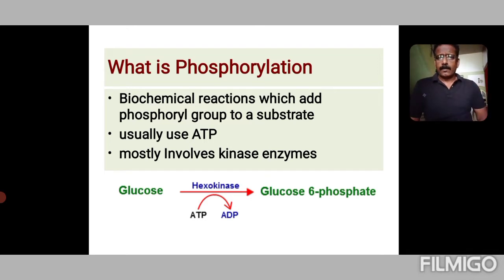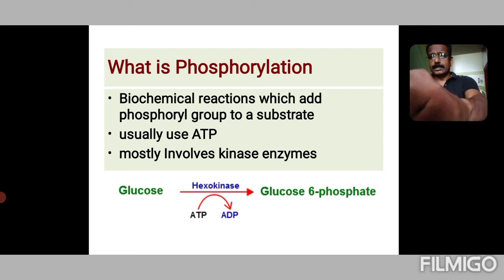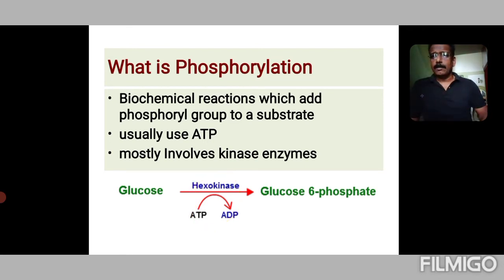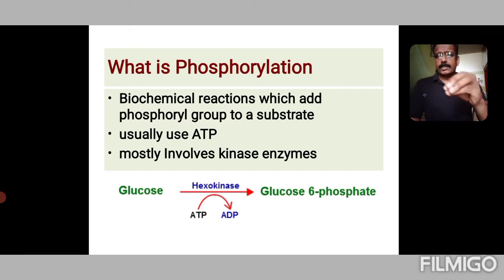One of the familiar reactions in glycolysis is shown here as an example: glucose giving glucose-6-phosphate in the presence of hexokinase or glucokinase, with the expenditure of one ATP. So this is an example of phosphorylation — that is, the transfer of a phosphoryl group from a substrate.